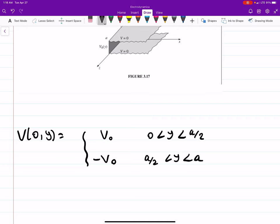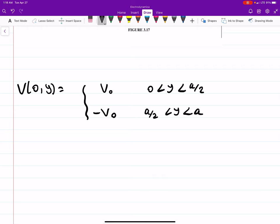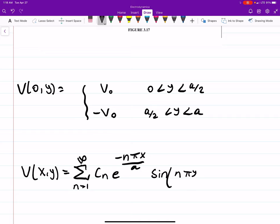Now the result we get from the problem, it'll work the exact same if you actually want to go through it, but for the sake of time, your potential is the sum from n equals 1 to infinity, c_n e to the negative nπx over a, sine of nπy over a.